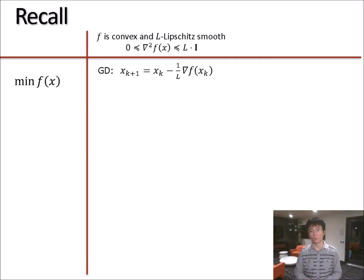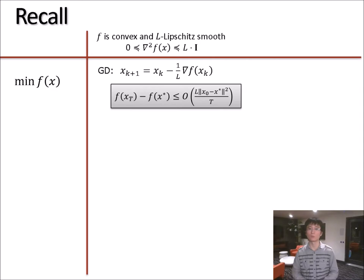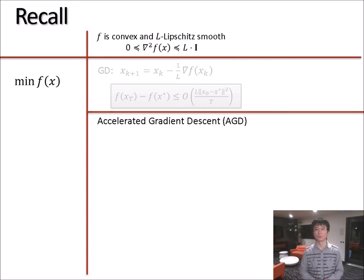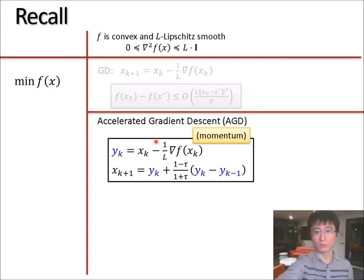One can apply one of the following two approaches. You can either do gradient descent that converges in rate 1 over T, or you can do the so-called accelerated gradient descent method, originally discovered by Yurii Nesterov. So here is how it works.